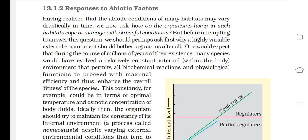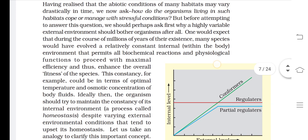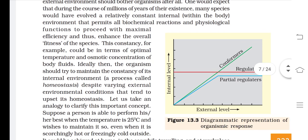Some examples are optimum temperature and optimum concentration of body fluids. Body fluids include blood and lymph. Ideally, the organism should try to maintain the constancy of its internal environment, and this process is known as homeostasis.